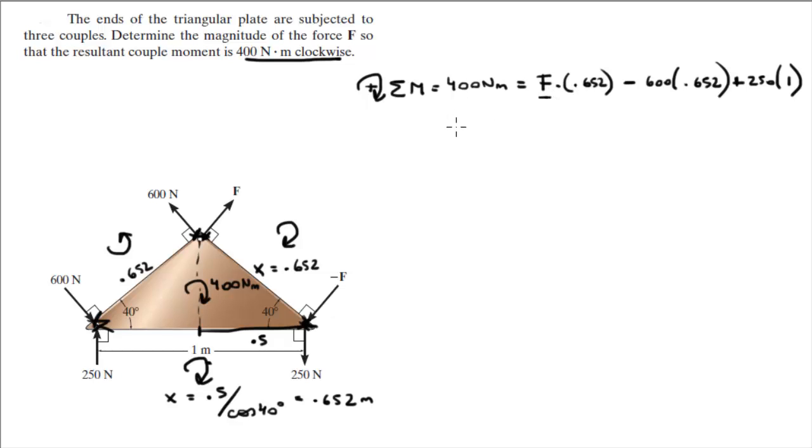F times 0.652 is equal to 400 plus 391 minus 250. F comes out to be 830.7 newtons. Final answer.